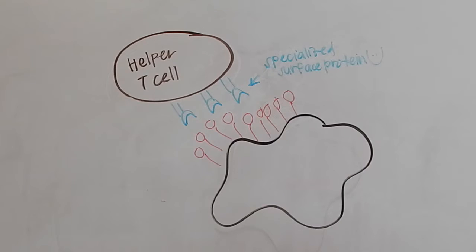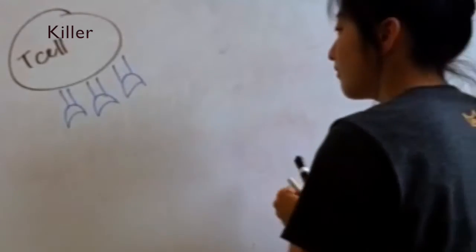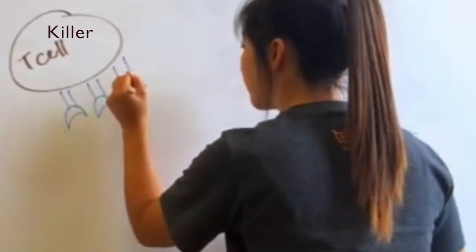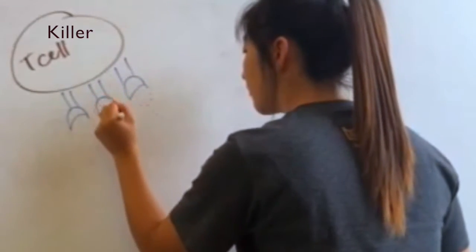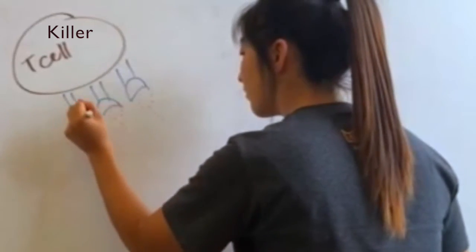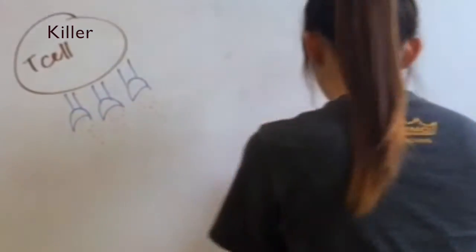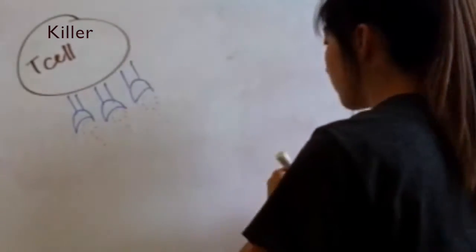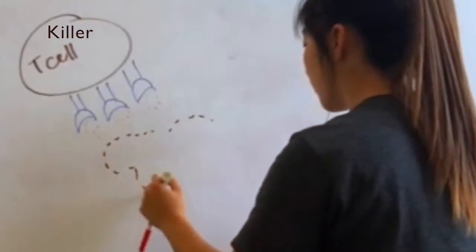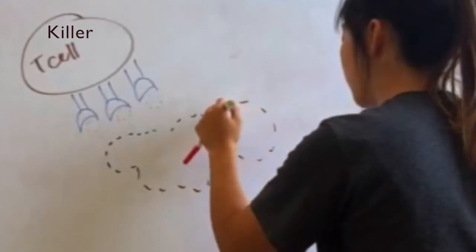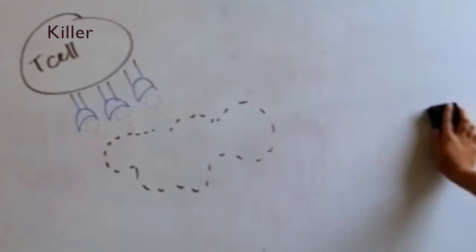Interleukin-2 then signals to the cytotoxic or killer T cells to bind to the antigen-presenting cell. The killer T cell will now destroy the antigen-presenting cell.